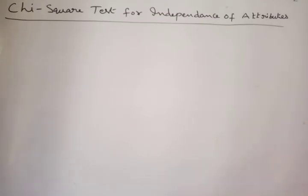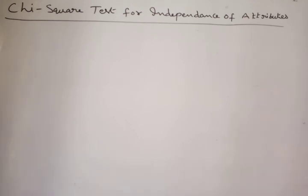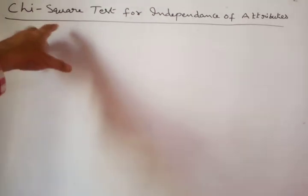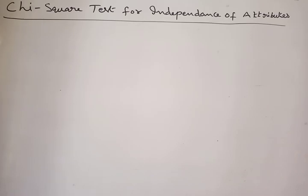Hello everyone, welcome to our online class. In today's class we'll discuss the last topic of test of significance of small samples — chi-square test for independence of attributes. An attribute means a quality or characteristic.